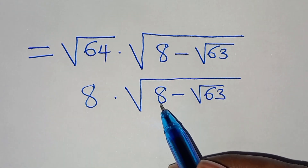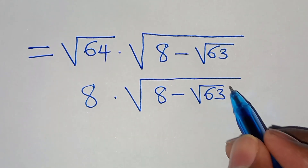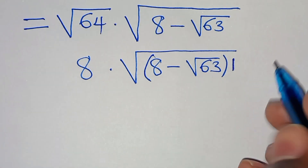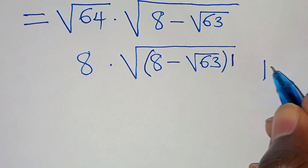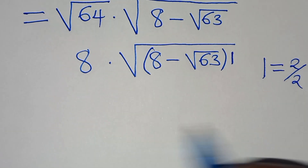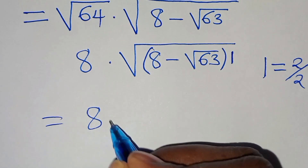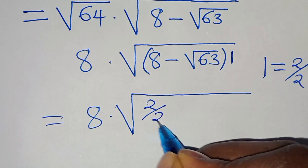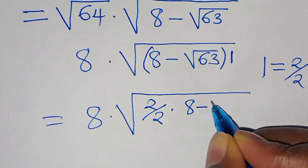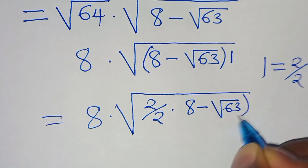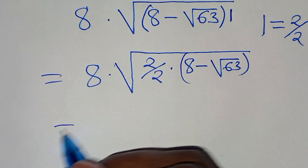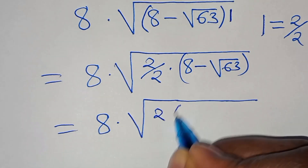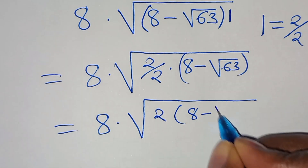Now we have 8 multiplied by square root of 8 minus square root of 63. We can factor, noting that 1 is common, so that we have 8 multiplied by 8 multiplied by square root of 2 over 2, multiplied by 8 minus square root of 63. This implies that we have 8 multiplied by square root of 2 multiplied by 8 minus square root of 63.